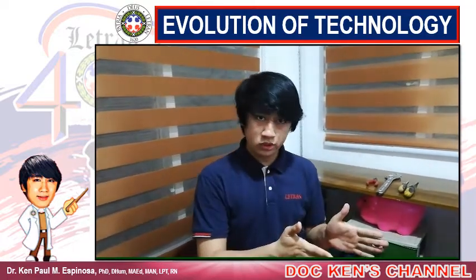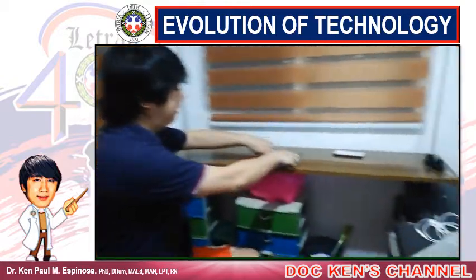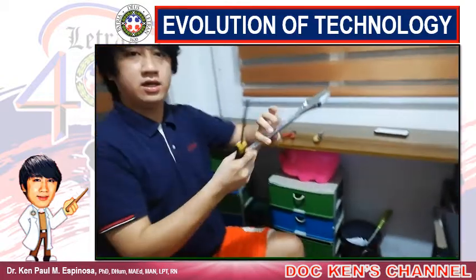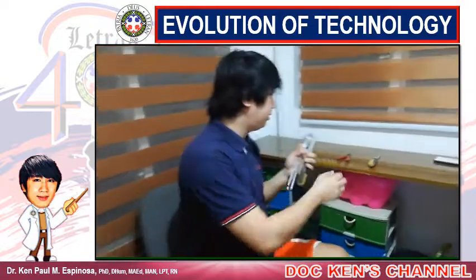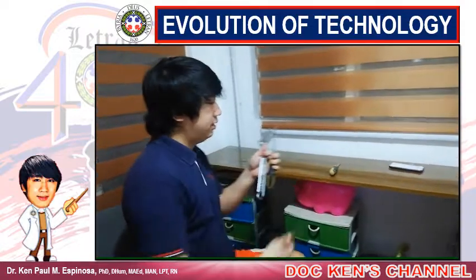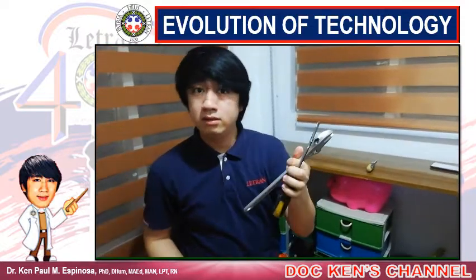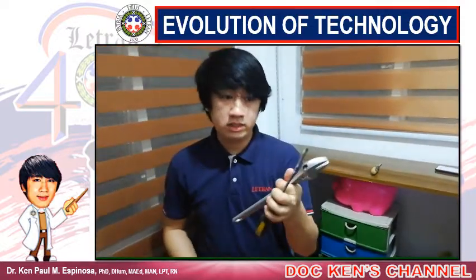First, let's discuss Level 1: From Tools to Machines. So examples of tools — as you can see, we have here a screwdriver, supplies, and a wrench. So what's the purpose of this?